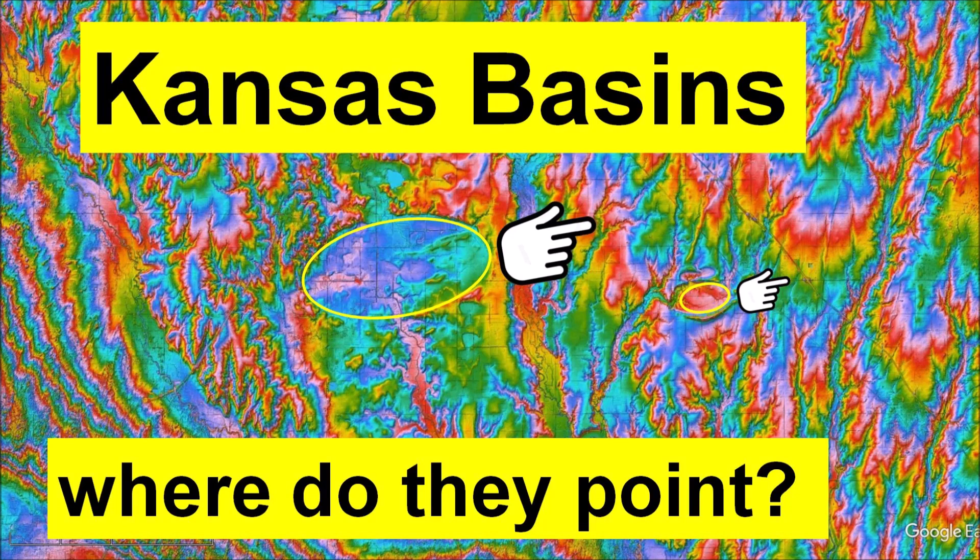Welcome to another discussion about the origin of the Carolina Bays and other elliptical basins oriented toward the Great Lakes. This presentation examines the basins in Kansas, which produce some surprising results that may change the story of the Glacier Ice Impact Hypothesis.